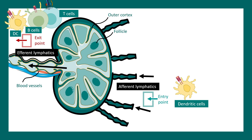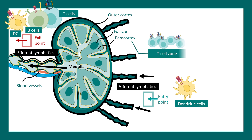There is an important structure called the outer cortex. Just beneath the outer cortex is the paracortex, and inside there is the medulla. The paracortex and the follicle are two important structures in the lymph node. The paracortex harbours T cells — it is simply the T cell zone — and the follicle is the B cell zone.